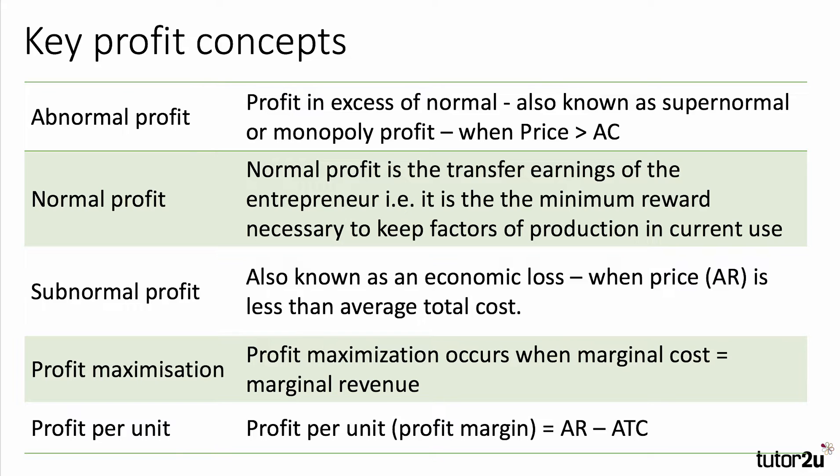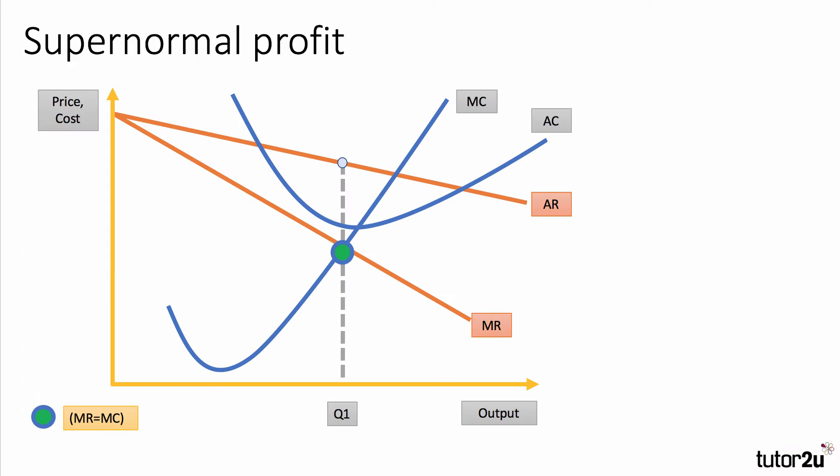A firm maximizes profits when marginal revenue equals marginal cost — in other words, when the marginal profit is zero. We can measure the profit per unit diagrammatically on a vertical scale by taking the price per unit minus the cost per unit. So let's look first of all at supernormal profit.